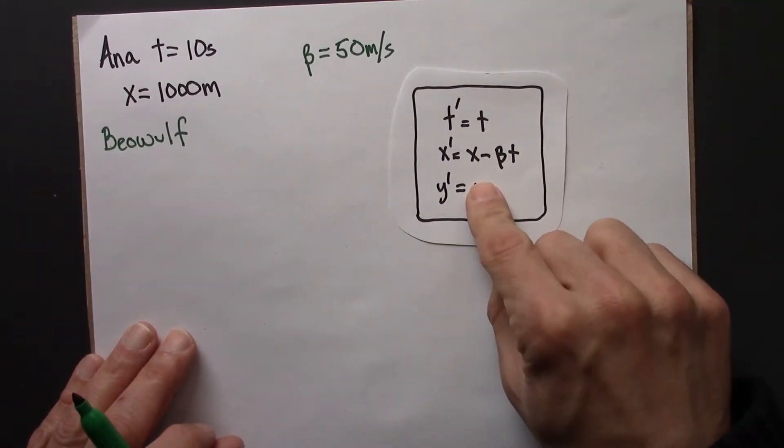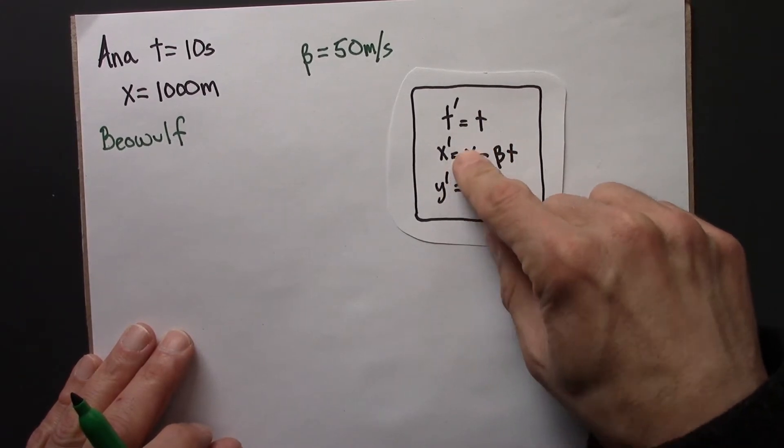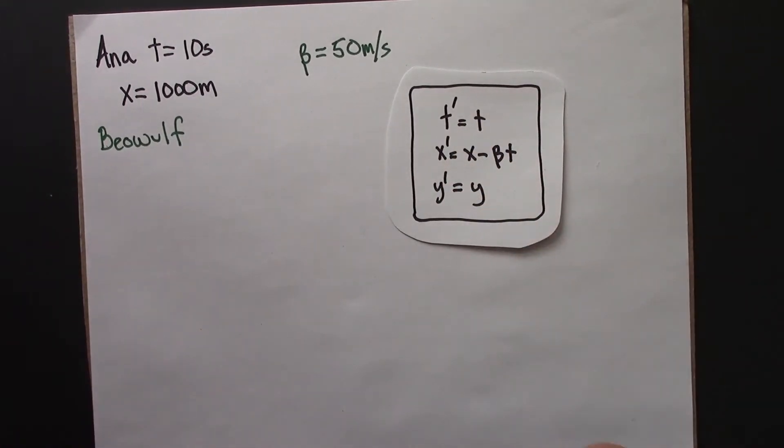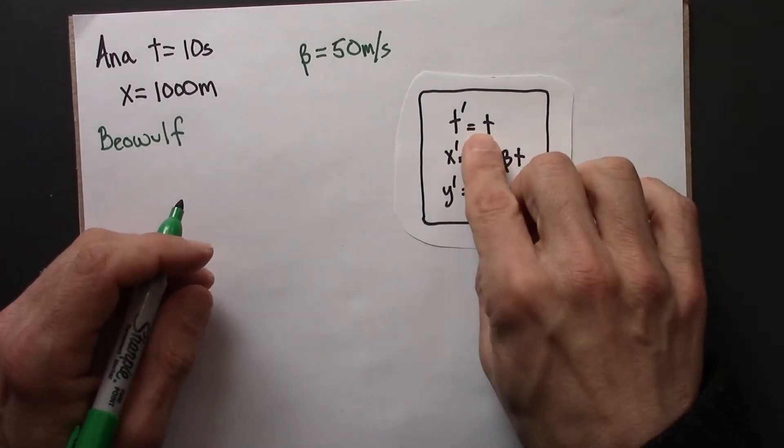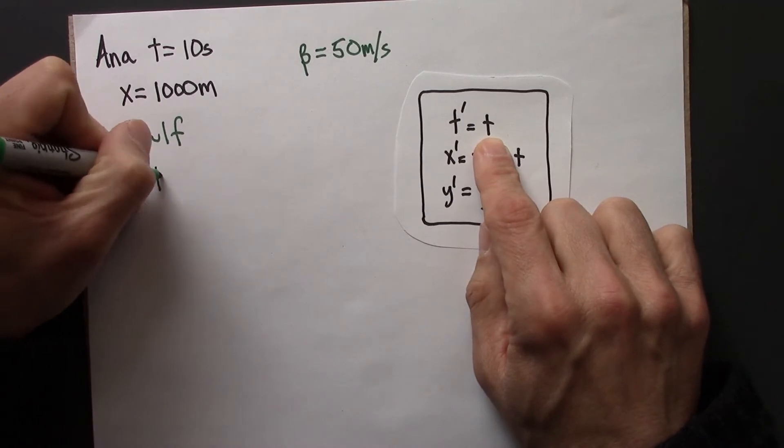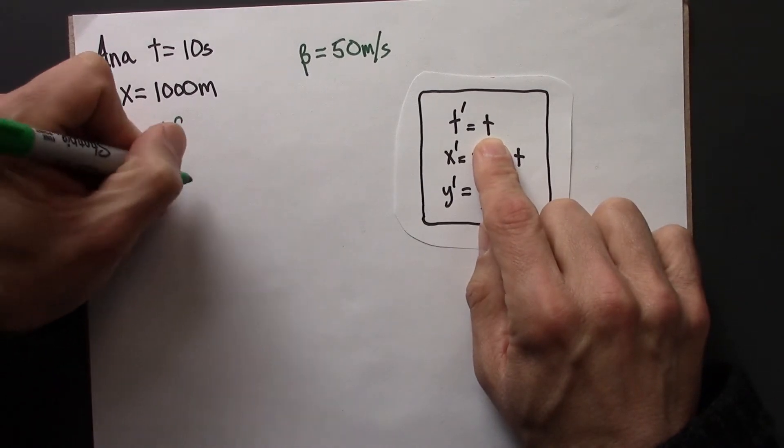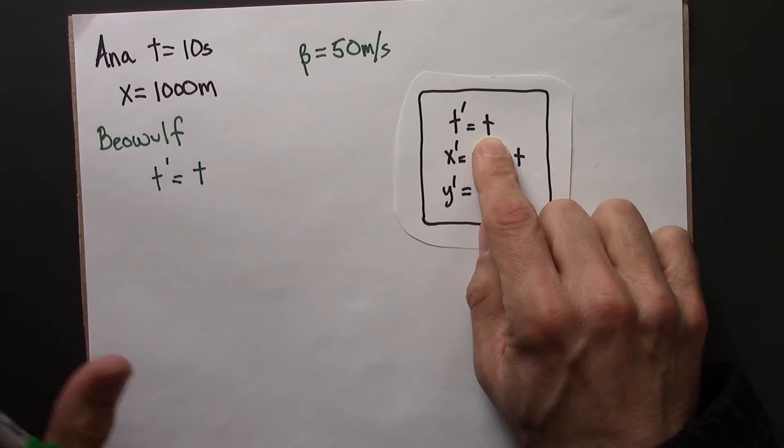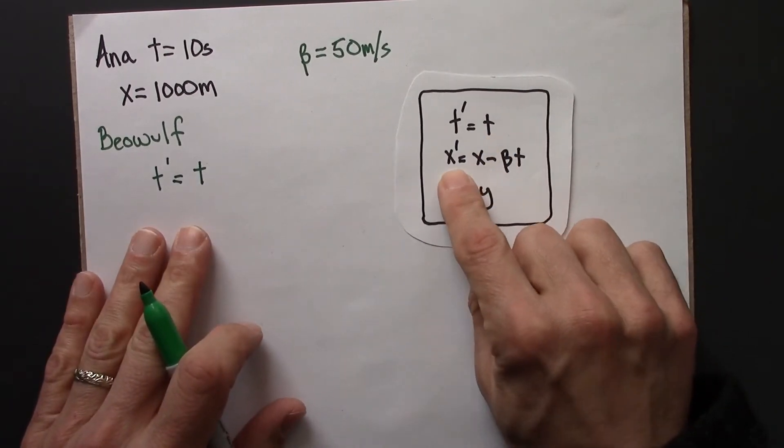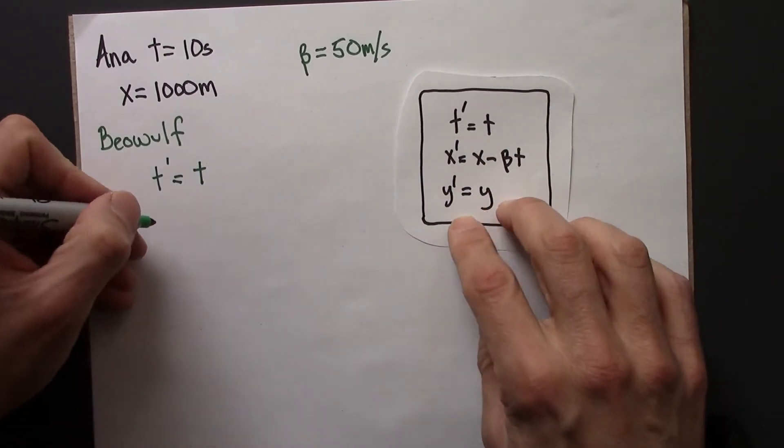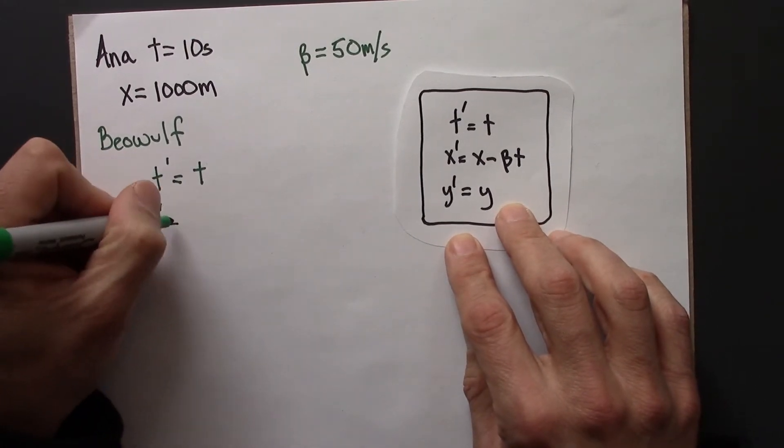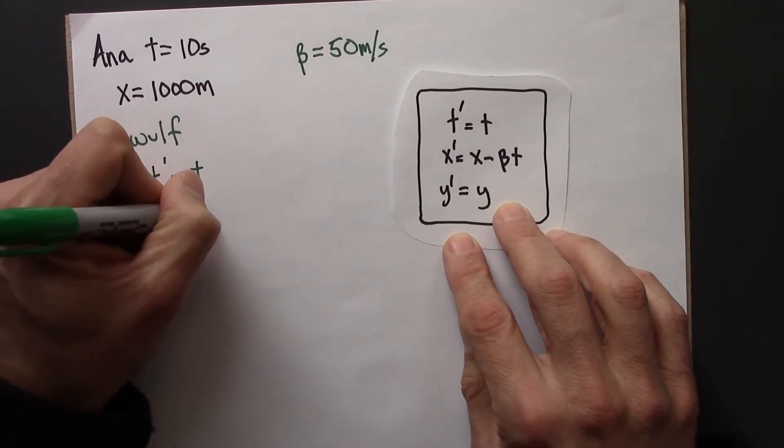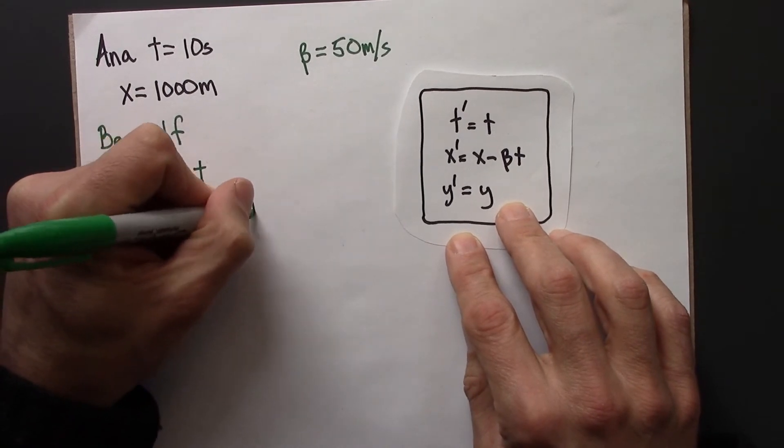So now I can use these formulas, like a dictionary, from French to English, or whatever, one language to another, to convert. So their times agree in Newtonian physics. Time is time. So everybody agrees on what time is. And then I can figure out X' here. So X', that's the position that Beowulf would measure.